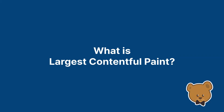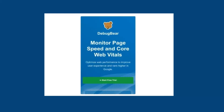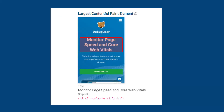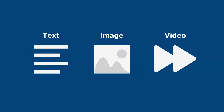What is Largest Contentful Paint? LCP measures how soon after navigation the main content of a website appears. Contentful means that content like text or an image were rendered rather than just showing empty boxes. The LCP element could be a text element, an image, or as of Chrome 116 a video frame.